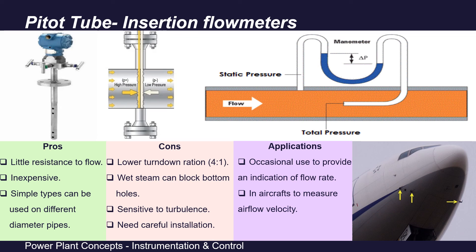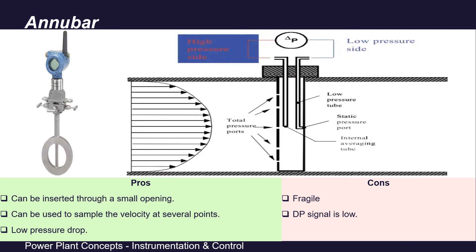Annubars are insertion-type devices that can be inserted through small openings, can sample velocity at several points, and have low pressure drop with minimal obstruction. Disadvantages include that they provide only single-point measurement, the pitot tube element is fragile, and the differential pressure signal is low — a weak signal.